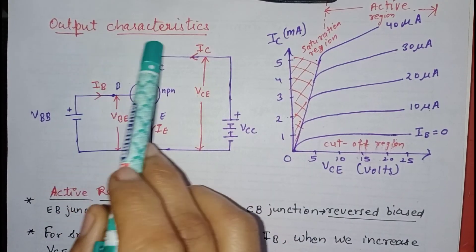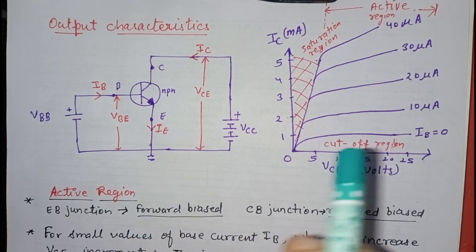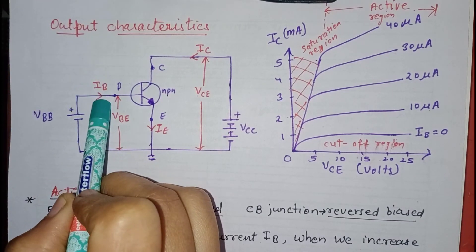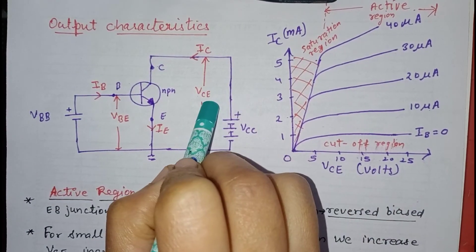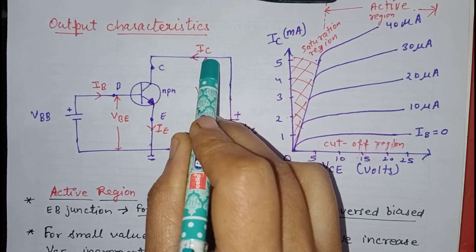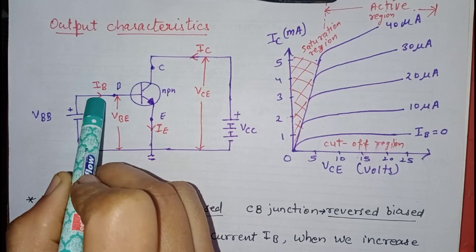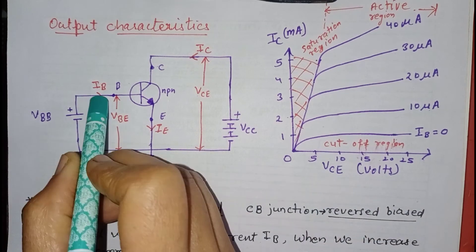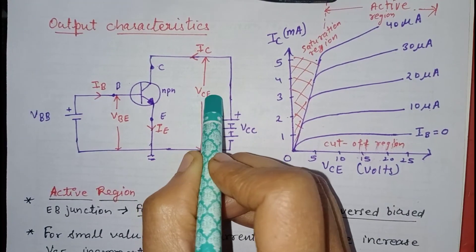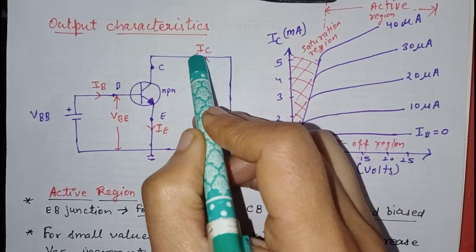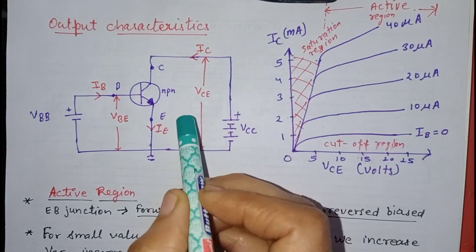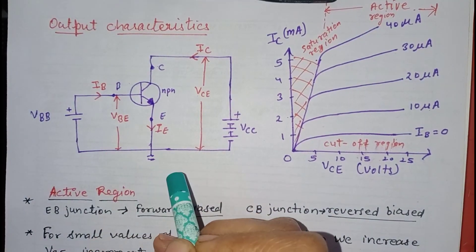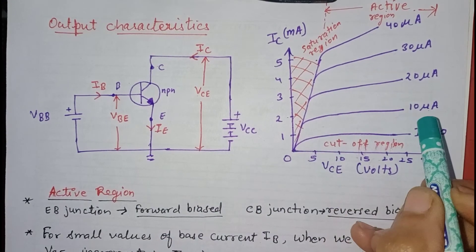Now we will discuss the output characteristics of the common emitter configuration. These are drawn between output voltage VCE and output current IC at a fixed value of base current IB. IC is measured in milliamperes and IB is measured in microamperes. To draw the output characteristics, we fix a value of IB, vary VCE in steps, and record IC. We repeat this for several values of IB to obtain the complete family of curves.